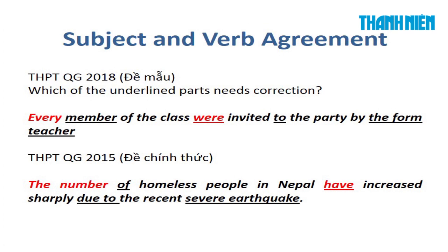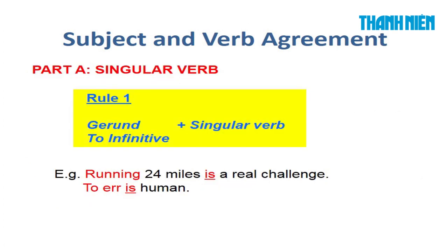Các bạn thấy tất cả đều có quy luật. Sau đây, cô xin giới thiệu đến với các bạn một số quy luật về subject and verb agreement. Bài này cô xin chia làm 3 phần: Part A — singular verb. Cô liệt kê tất cả những công thức, những trường hợp mà các bạn bắt buộc phải dùng động từ số ít.